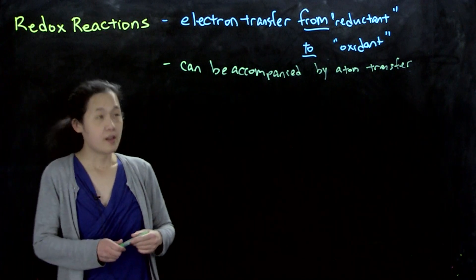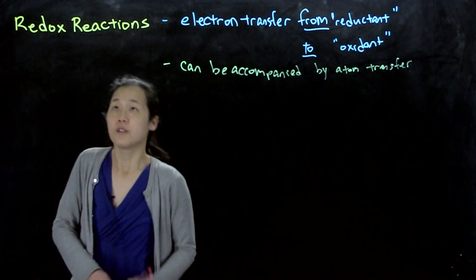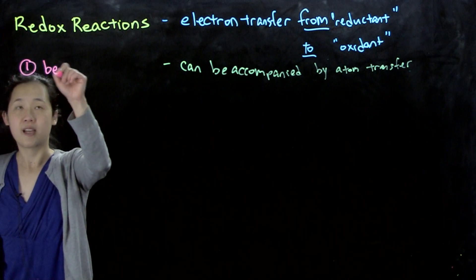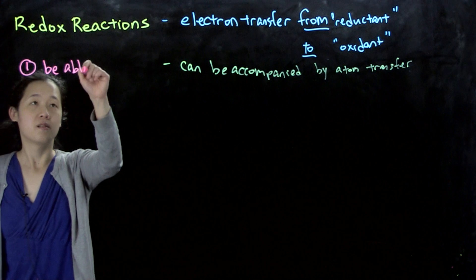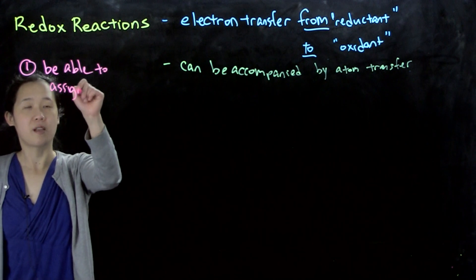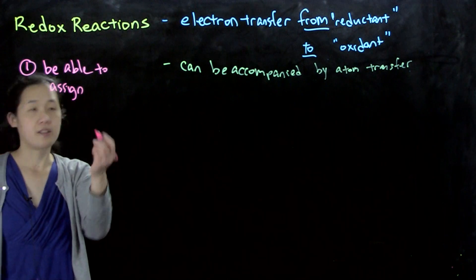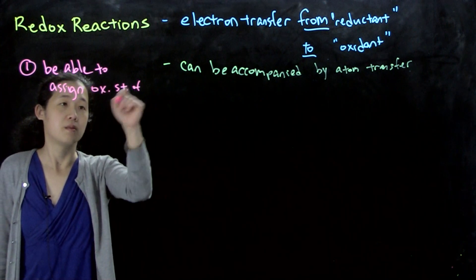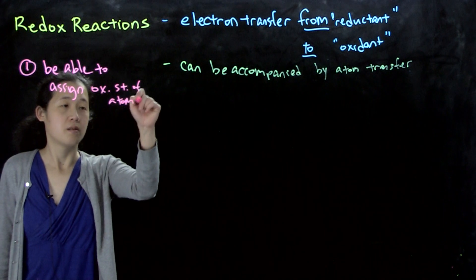So things that you need to be able to do: on your own, review, be able to assign oxidation states of different atoms. I have some examples of what you should be able to do in the outline.